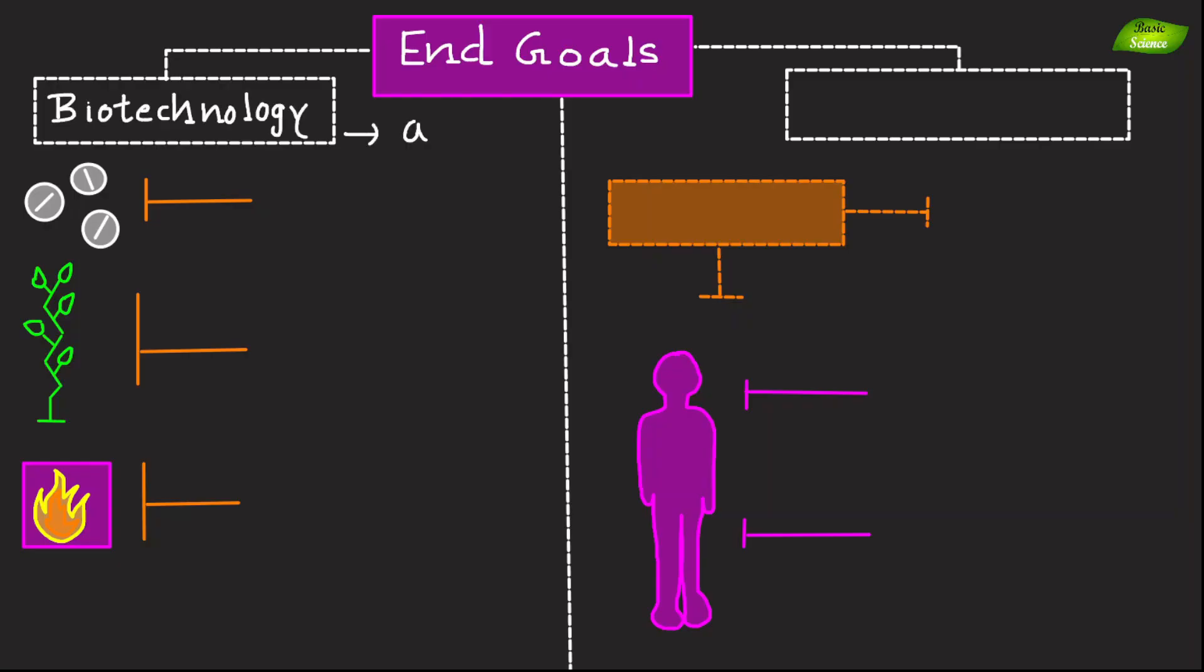Biotechnology primarily aims to create or improve products such as pharmaceuticals, agriculture products, or biofuels using biological systems.